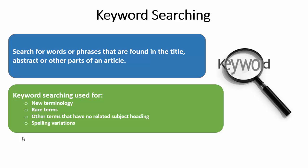Another time to use keywords is when there are spelling variations. This especially happens when you're looking at international literature where the American spelling may not match up with the European spelling — such as the American spelling for color is C-O-L-O-R, and the European spelling is C-O-L-O-U-R. In those cases, you have little choice but to use keywords.